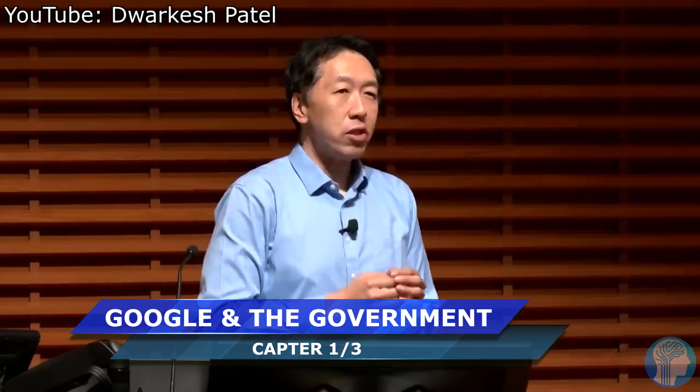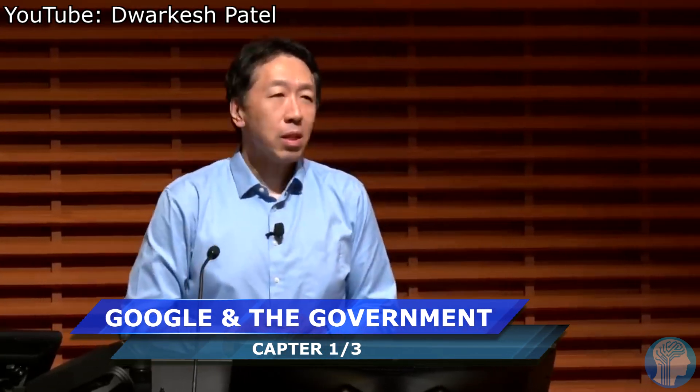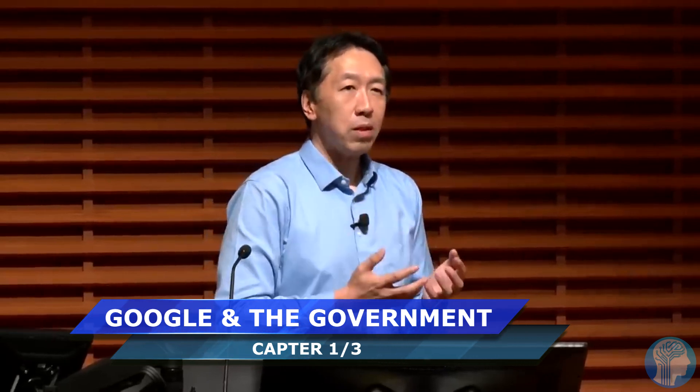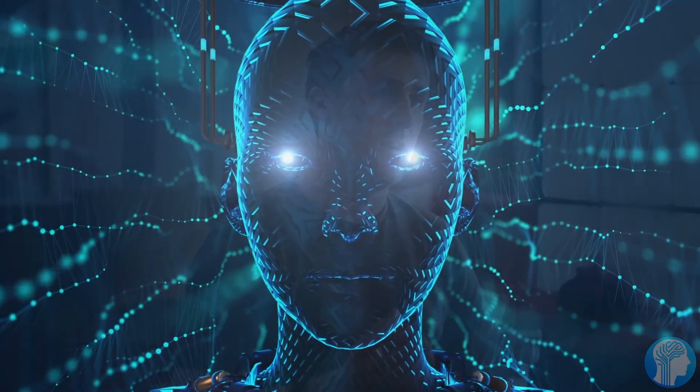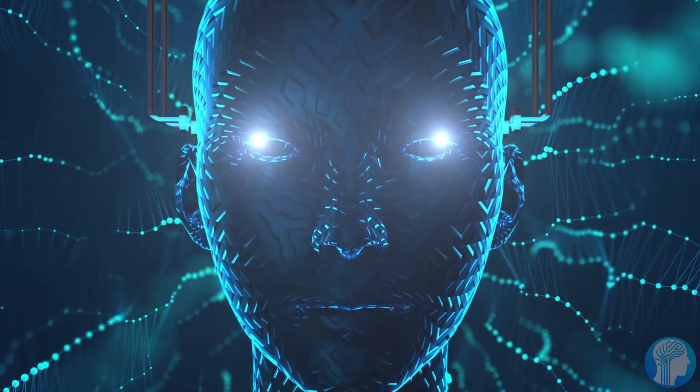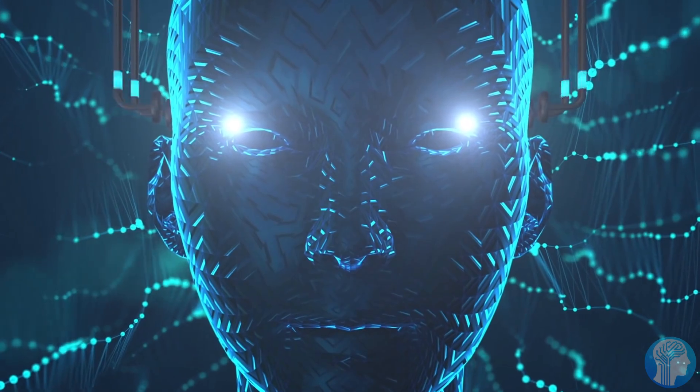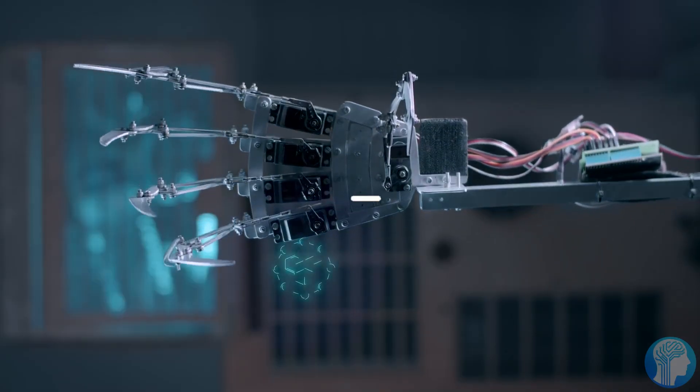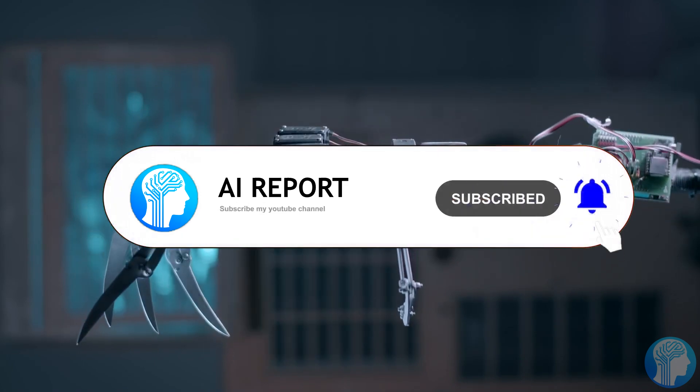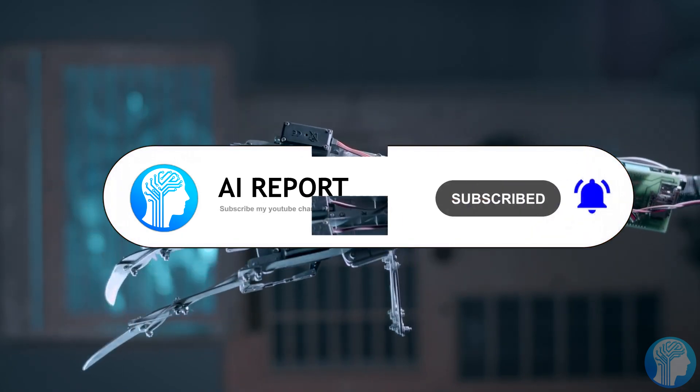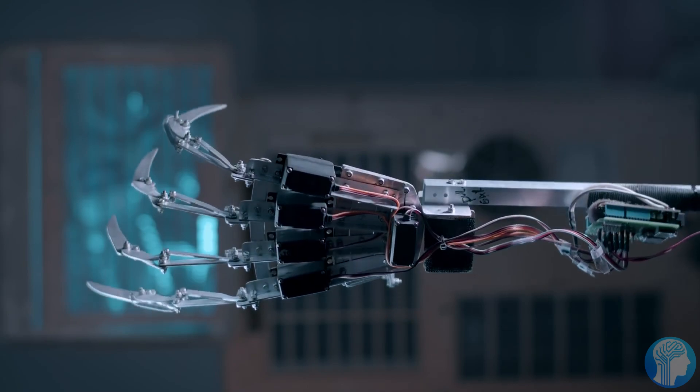In a shocking revelation, Google Brain co-founder Andrew Ng has exposed a startling truth about big tech's stance on AI. According to Ng, industry giants like Google and OpenAI are deliberately exaggerating fears surrounding AI's potential to wipe out humanity. Their ulterior motive: to gain a stranglehold on the market by pushing for stringent regulations.